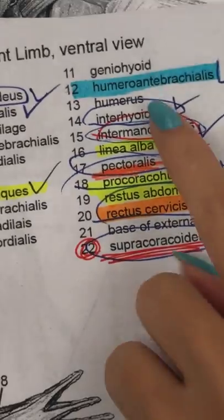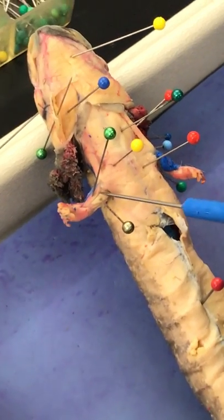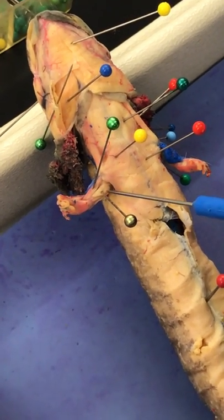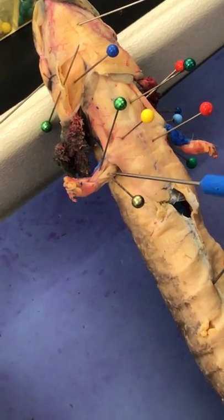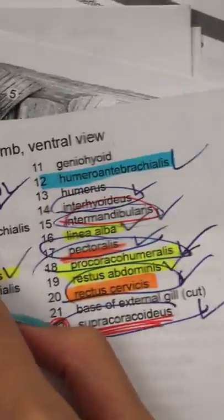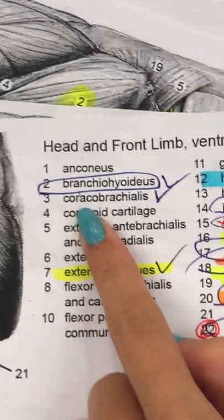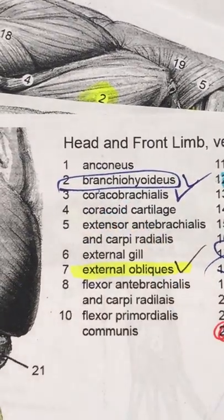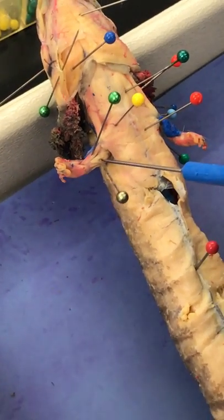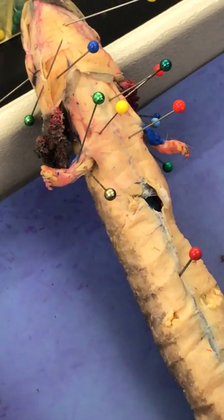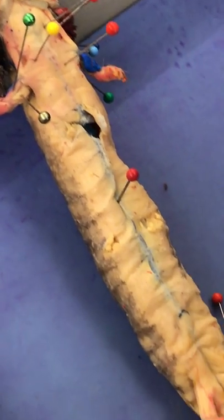Where's that one? This one, yeah. Okay, so it's on top. This one is humeral interbrachialis. This is coracobrachialis. So this is below. This is linea alba.